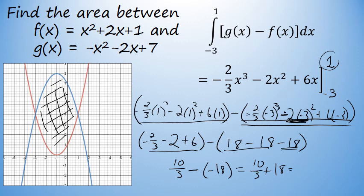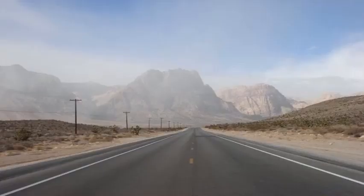10 thirds plus 18 equals 64 thirds. This number, which is equal to 21.3 repeating, is the exact area between f of x and g of x: 64 thirds.